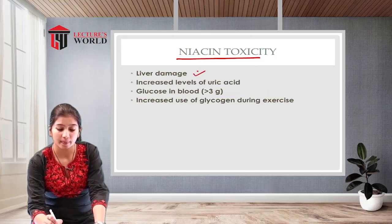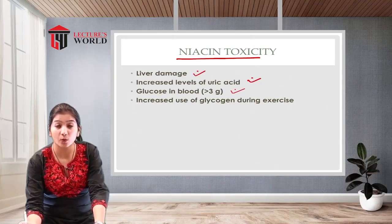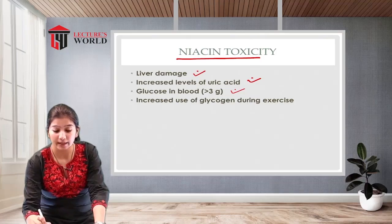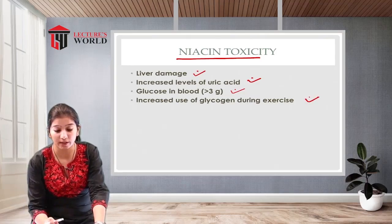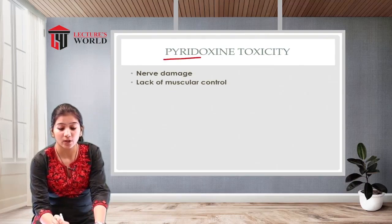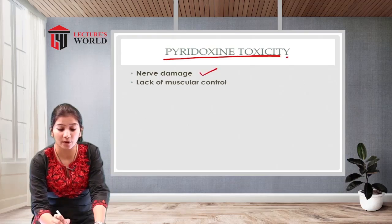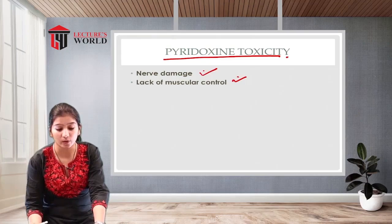Niacin toxicity, if niacin is consumed in a higher amount, may lead to liver damage, increased levels of uric acid in the body, elevated blood glucose at more than 3 grams, and increased use of glycogen during exercise. Pyridoxine toxicity from increased consumption may lead to nerve damage and lack of muscular control.